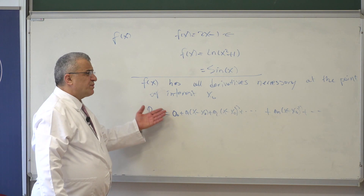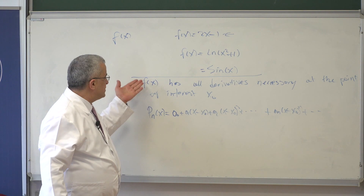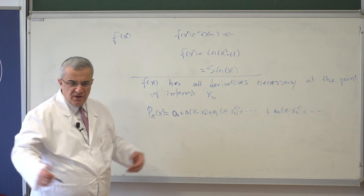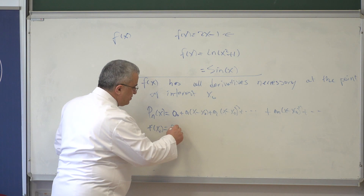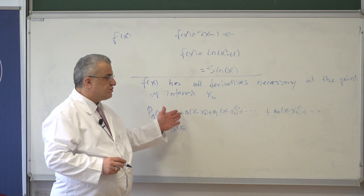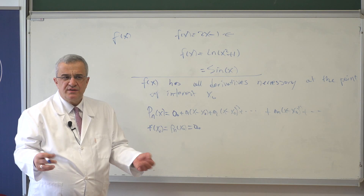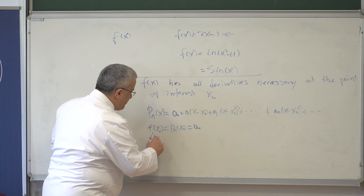So how can I pick a₀, a₁, a₂, …, aₙ? What would be logical is to require that the function and the polynomial should be equal at x = x₀. So your condition would be f(x₀) = pₙ(x₀). When you do that, what is pₙ(x₀)? It is a₀ — everything else becomes zero. So that immediately tells you a₀.